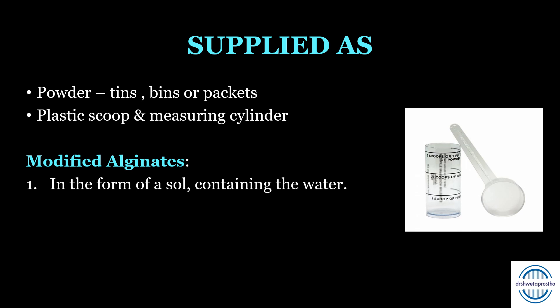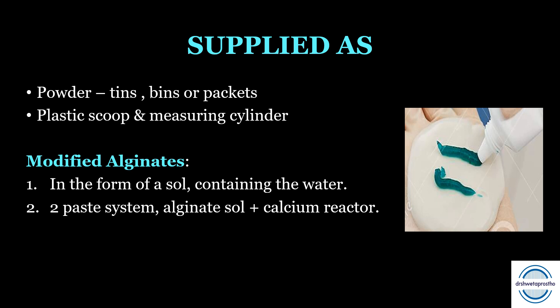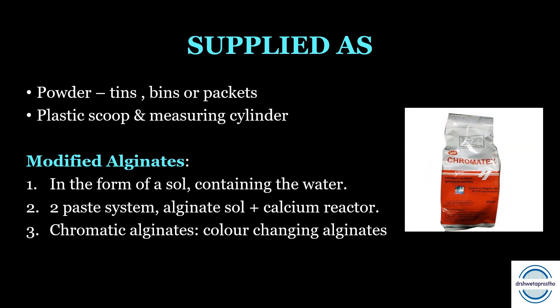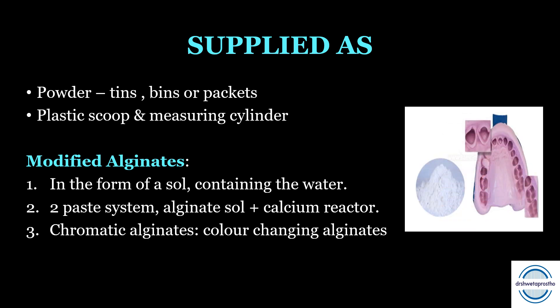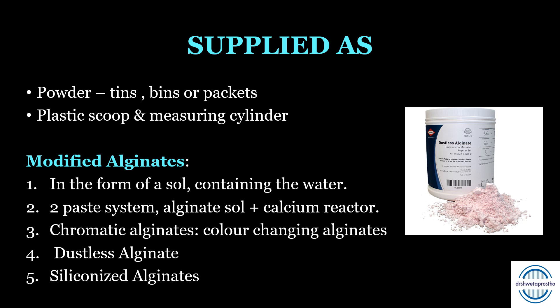Some modified alginates — favorite examiner questions: first, supplied as a sol containing water with a reactor plaster of paris supplied separately; second, a two-paste system with one containing the alginate sol and the second containing the calcium reactor; third, chromatic alginates — color-changing alginates containing an acid-base indicator that changes color at critical points indicating mixing time, loading into the mouth, and setting time; fourth, dustless alginates where powder particles are coated with glycol to avoid dust inhalation; fifth, siliconized alginates modified by incorporation of silicon polymers to improve physical properties.